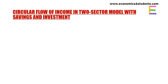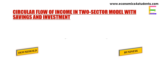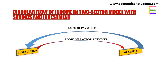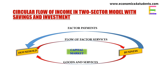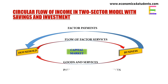Here we will illustrate savings and investment in our model of circular flow of income. There are two sectors: household and business sector. Factor services flow from household to business sector, factor payment flows from business to household sector, and goods and services come from business to households. A new sector known as the capital market has been introduced.